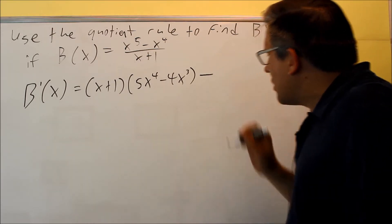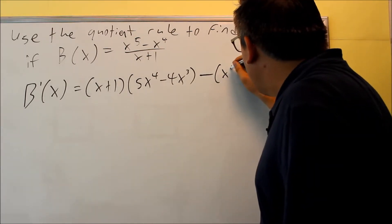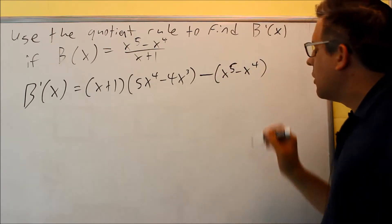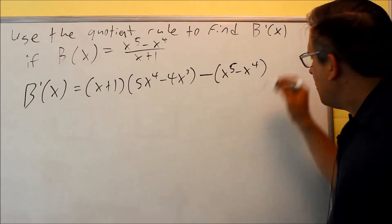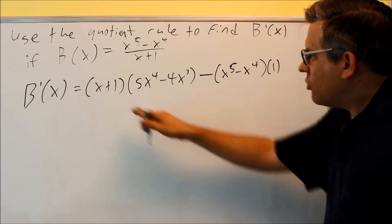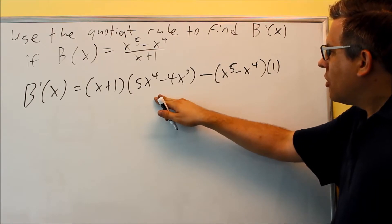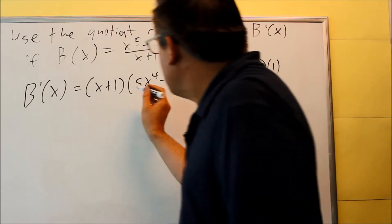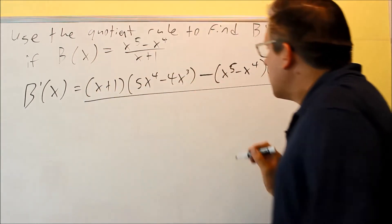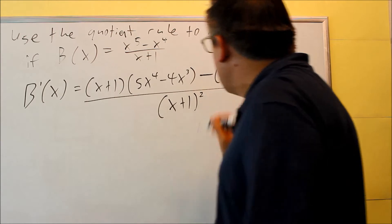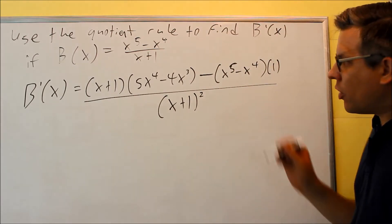We've got a minus sign minus the top, x to the fifth minus x to the fourth. We have the minus sign there times the derivative of the bottom. The derivative of the bottom is 1. So, g, f primed minus f, g primed. Okay, so we've got the top parts done. We've got the bottom, x plus 1 squared. That's your g squared in the bottom.